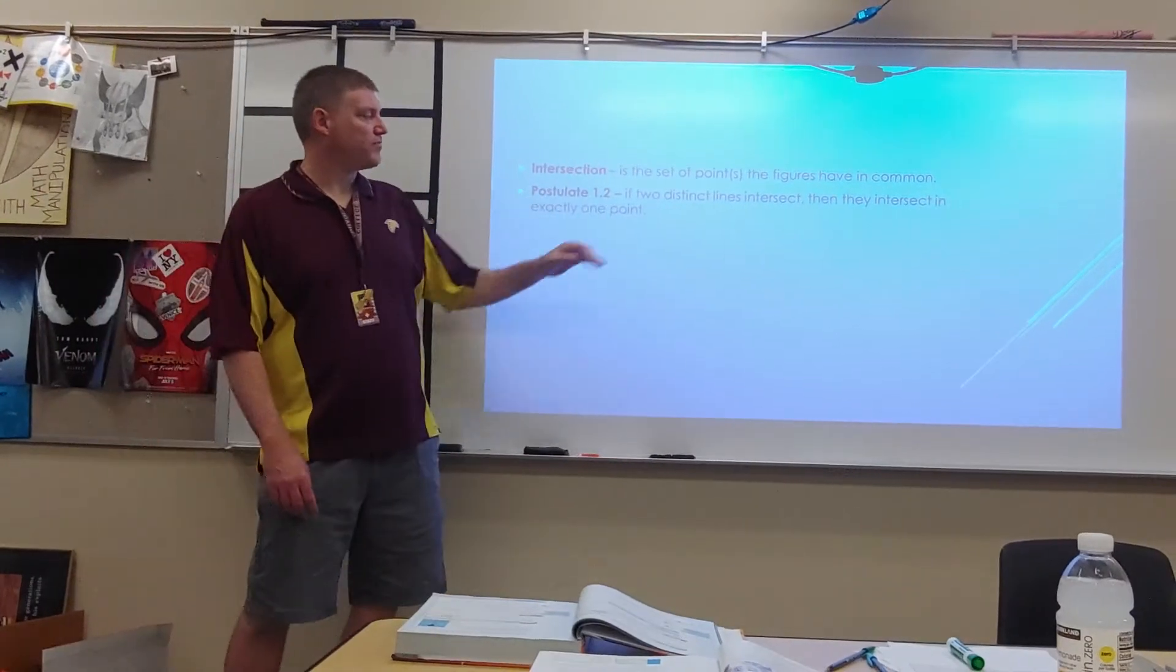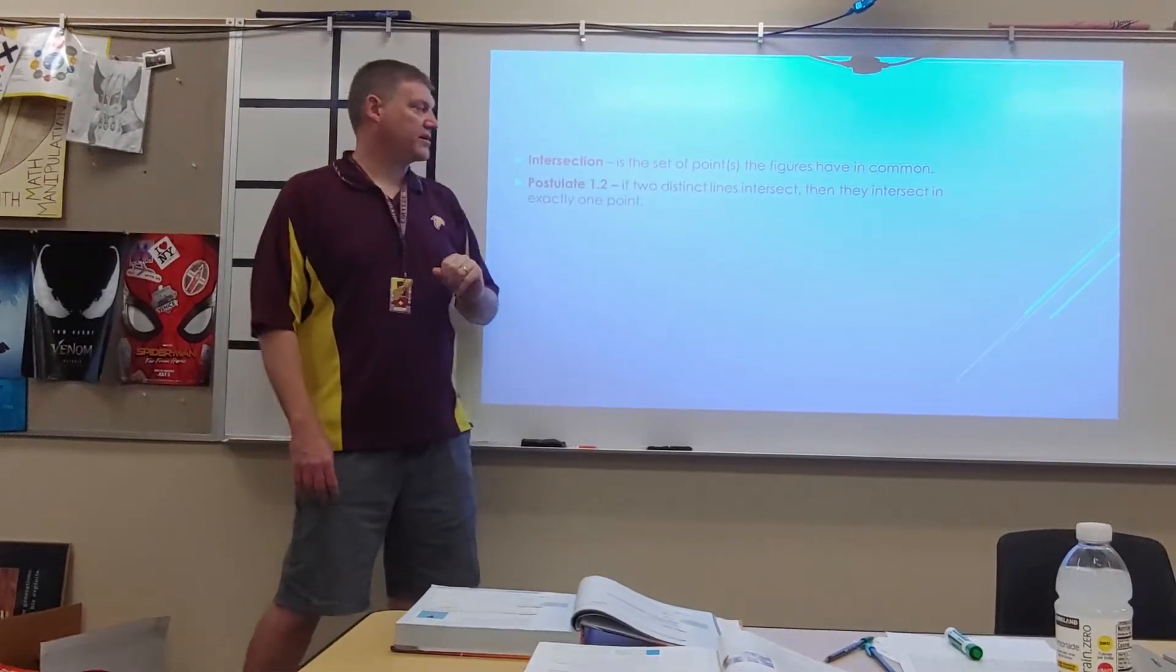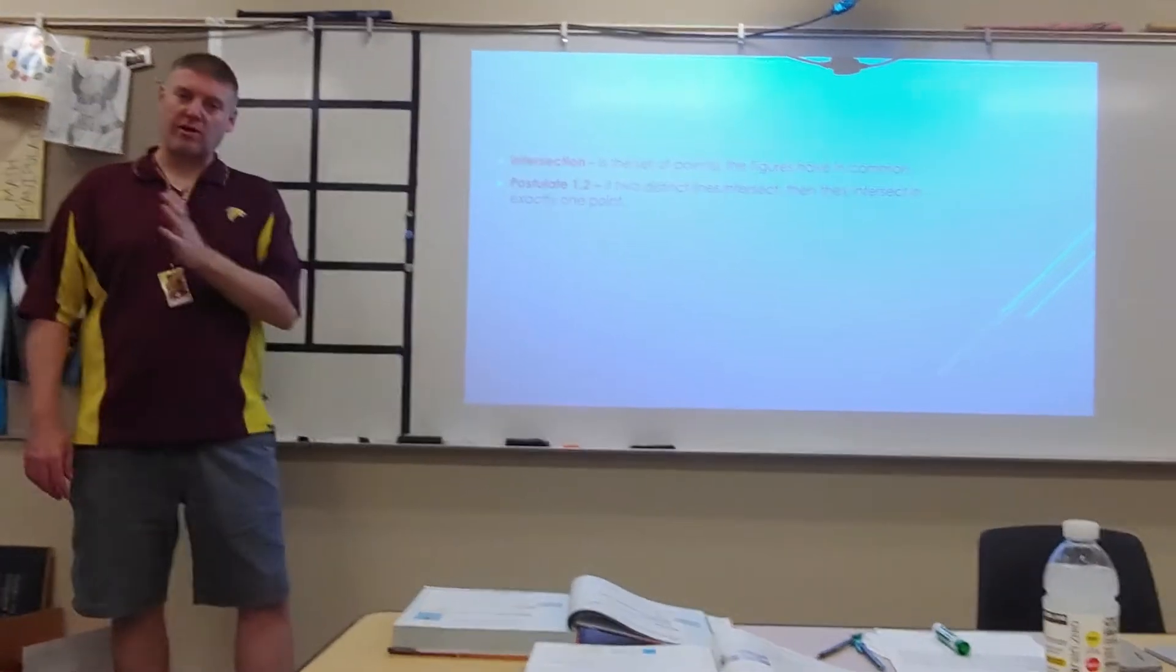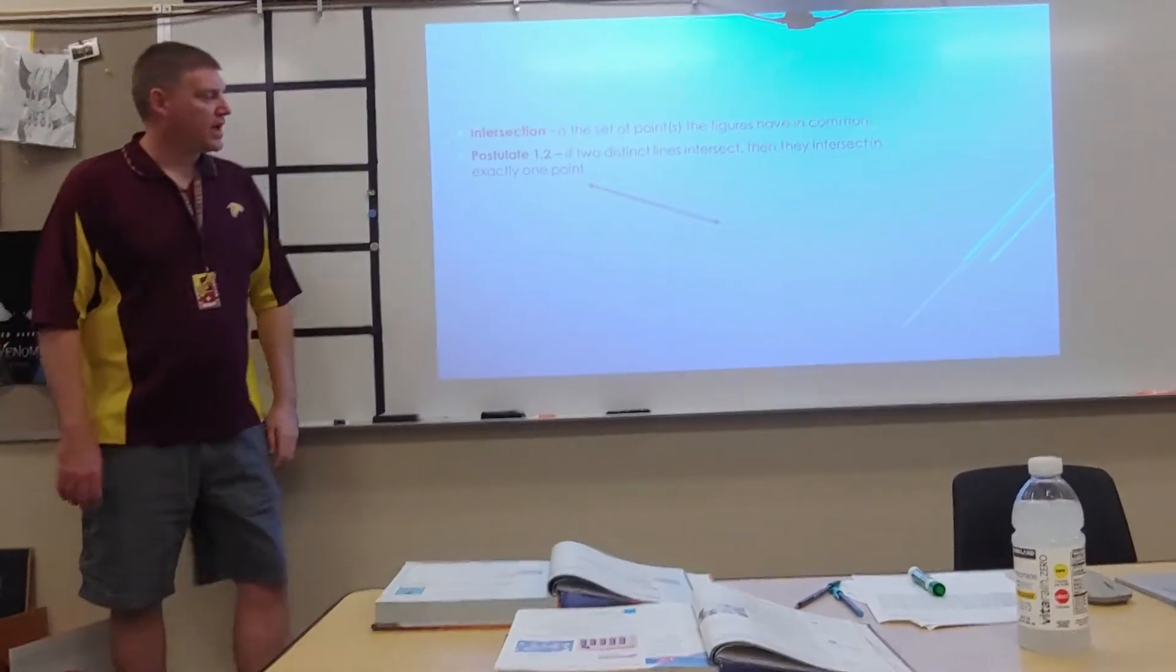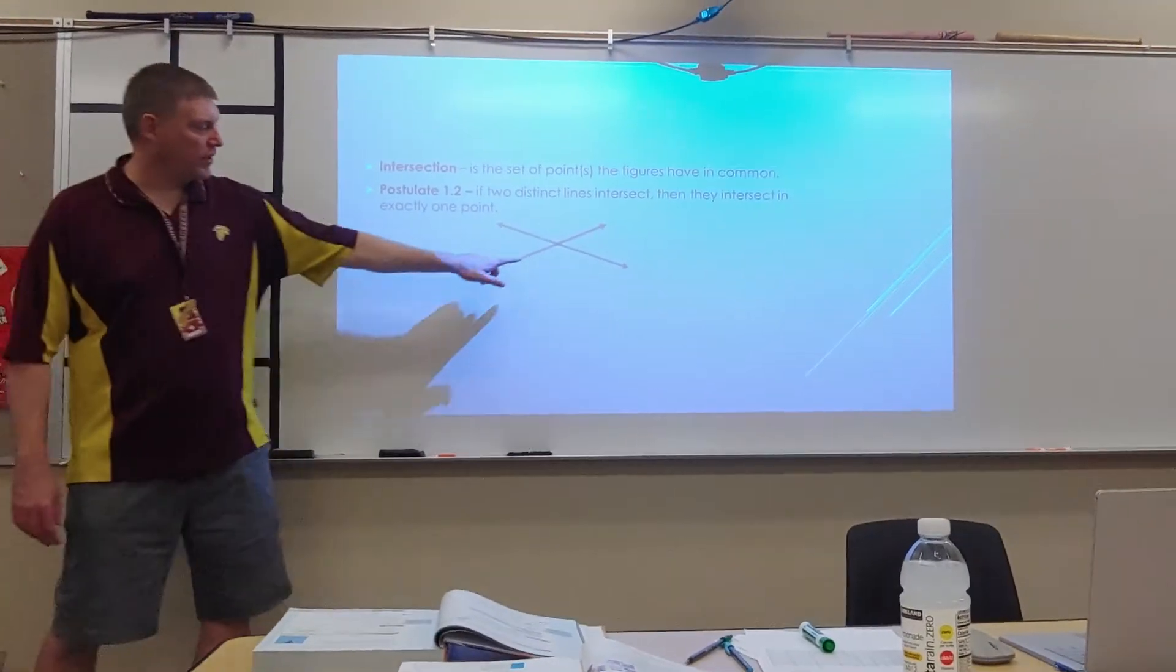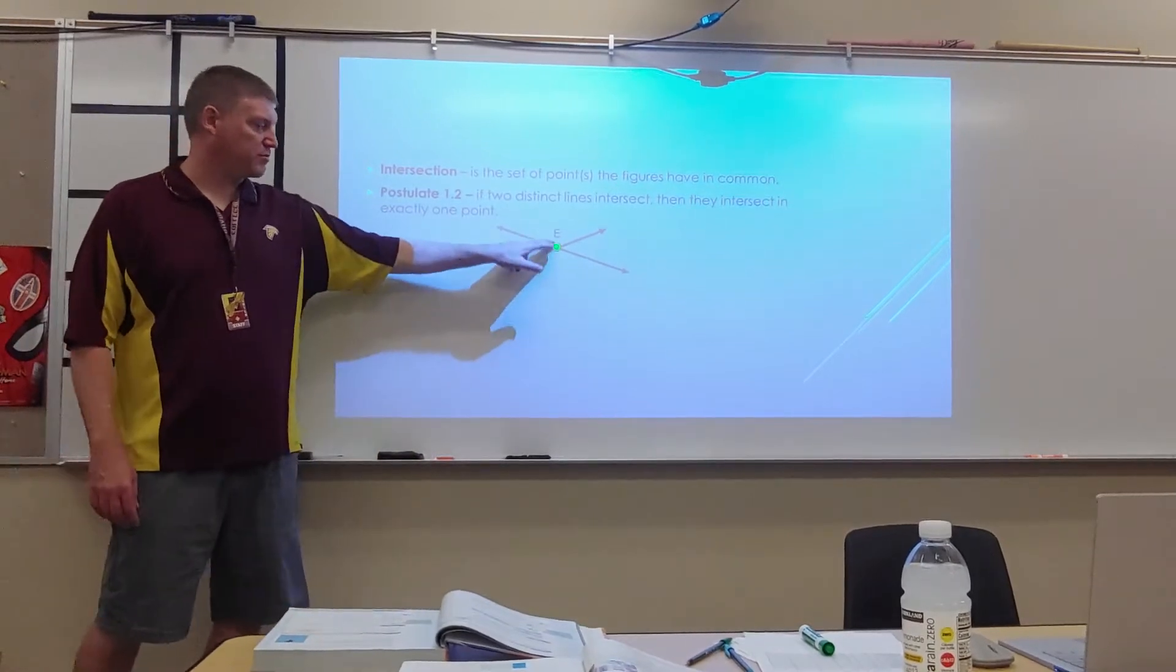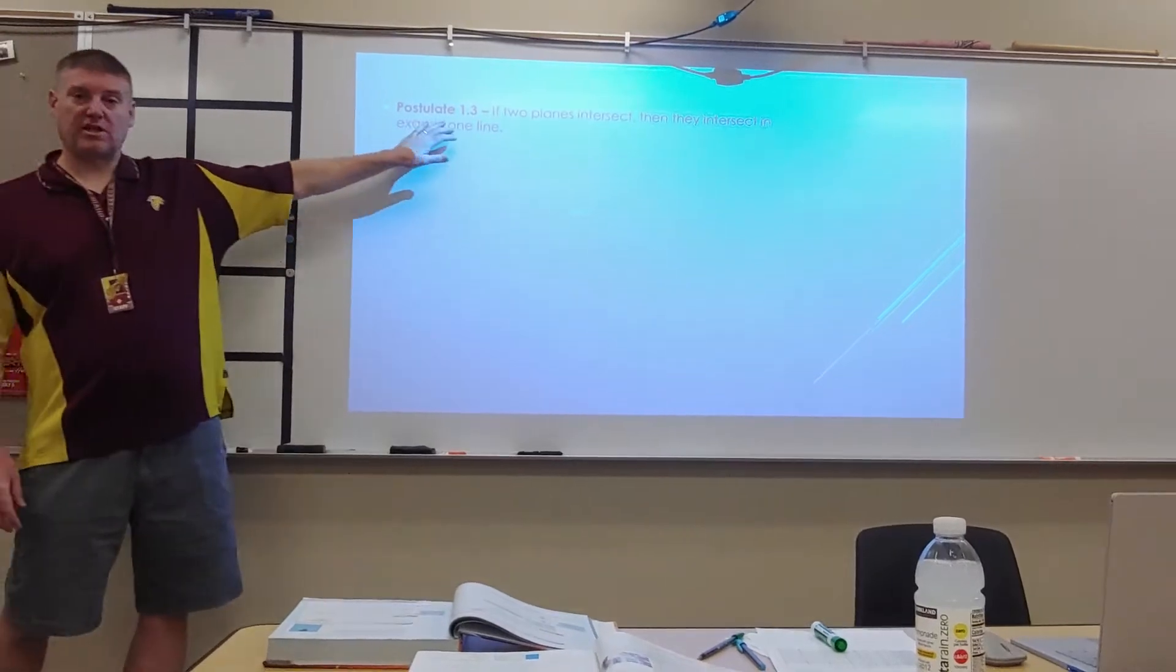Postulate 1.2: If two distinct lines intersect, they intersect in exactly one point. We want to have that word distinct in there, because that way we don't have lines that are overlapping. Here's my first line. I have a second line. Notice these are distinct, they're not overlapping. They will intersect in one point right there. That point where they intersect is E.